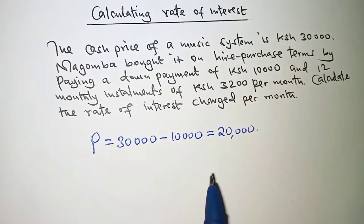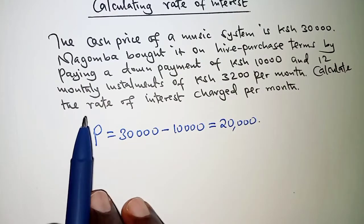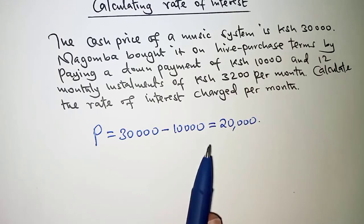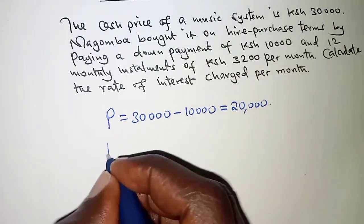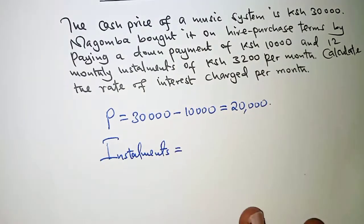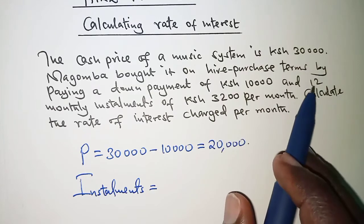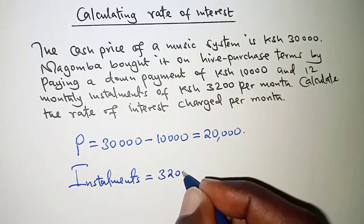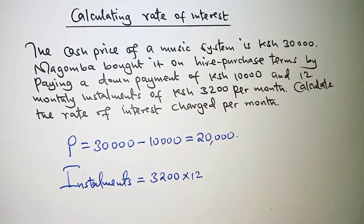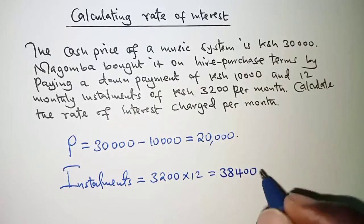So this amount here is supposed to be paid in installments. And during the payment, it will accrue some interest. So it is the rate of that interest we are required to calculate. So at this particular point, we need to determine the installments. And the installments we are told that each is 3,200 per month and they are 12 months. So total installments should be 3,200 times the 12 months, and this should be 38,400 Kenyan shillings.